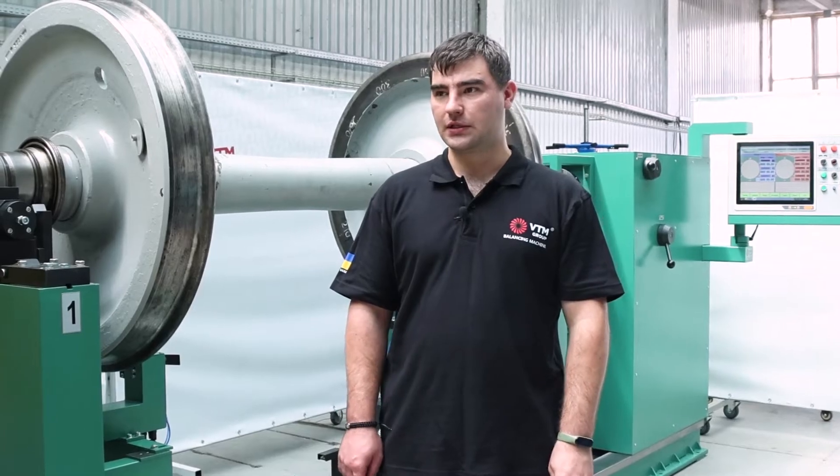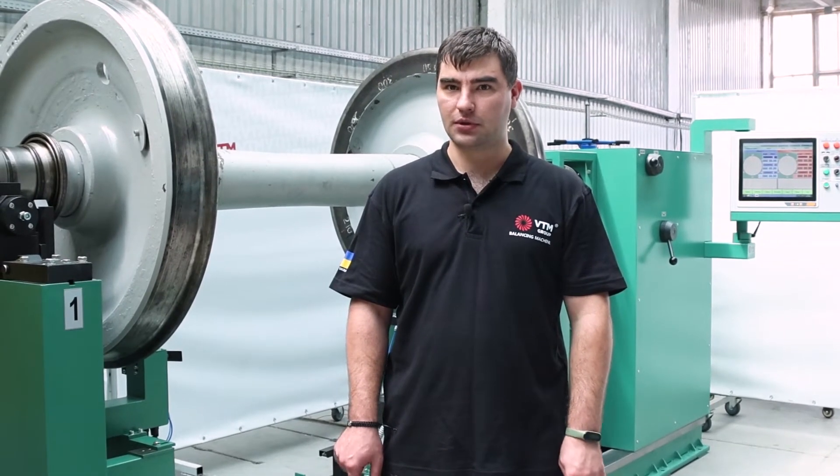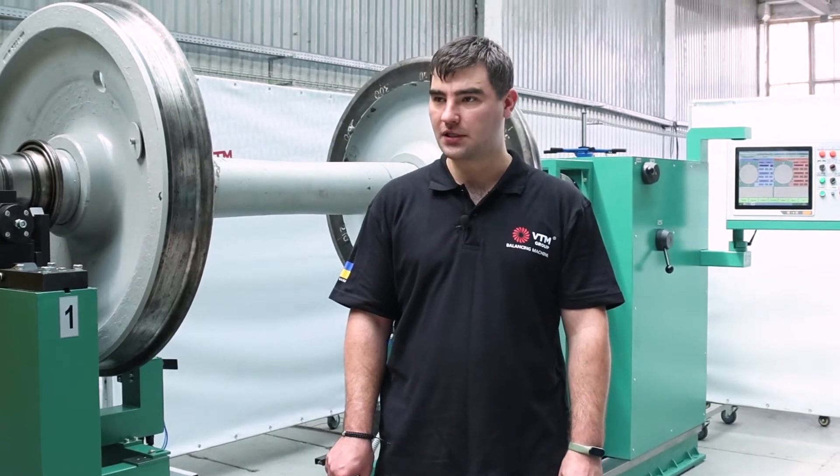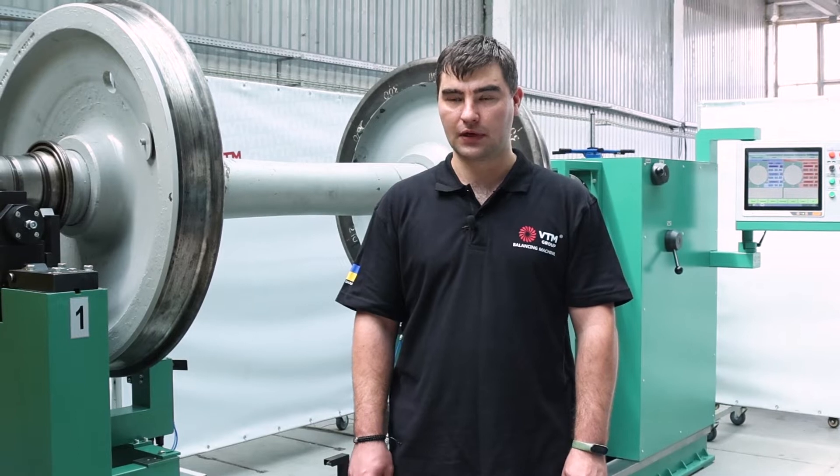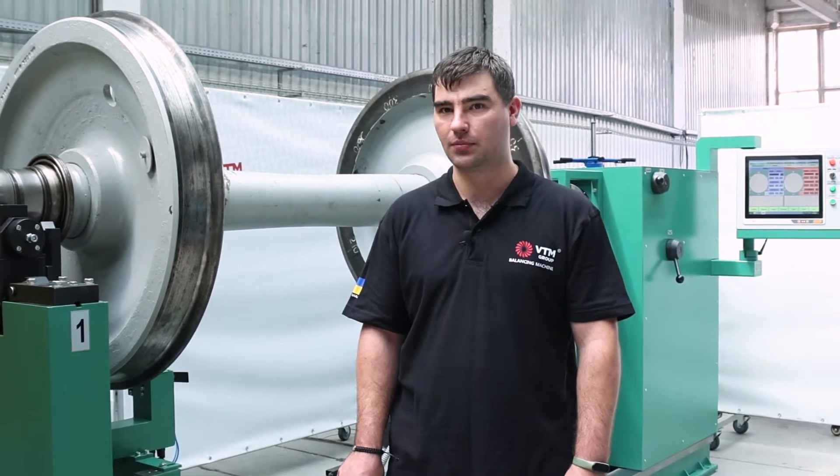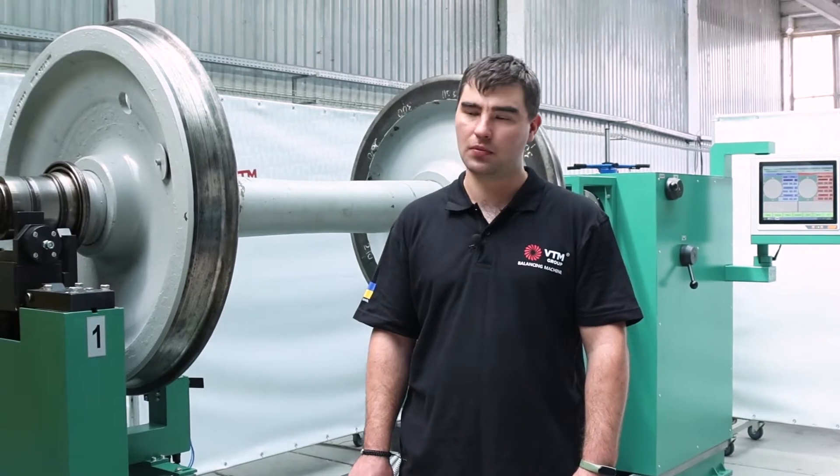This machine is designed to balance wheelsets according to the following characteristics. It measures the run-out of the wheelset, measures the impact and unbalance of the wheelset, puts it into one report, and based on the results of this report, we can judge whether the wheelset is ready for operation on any type of wagon.